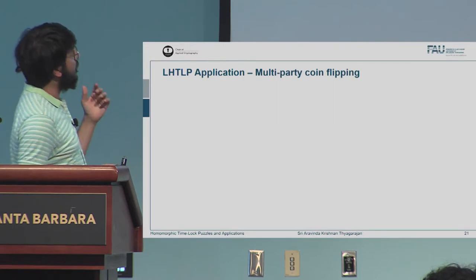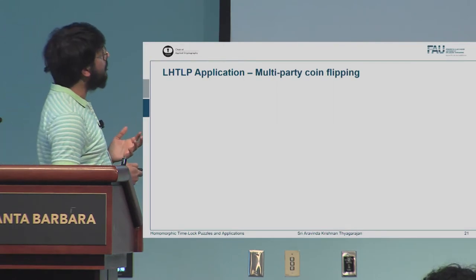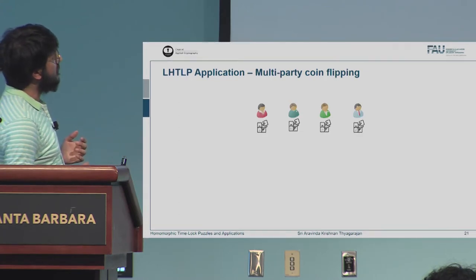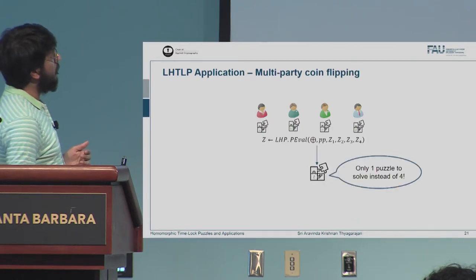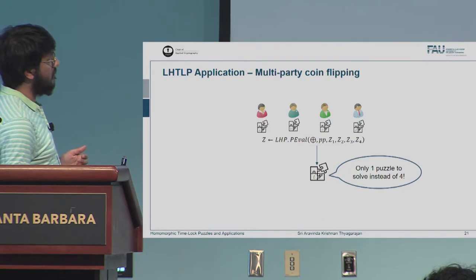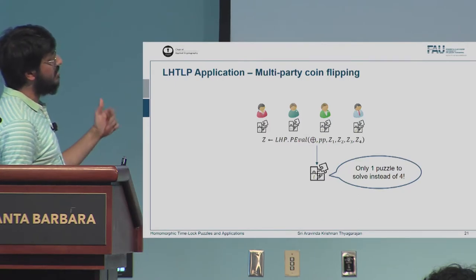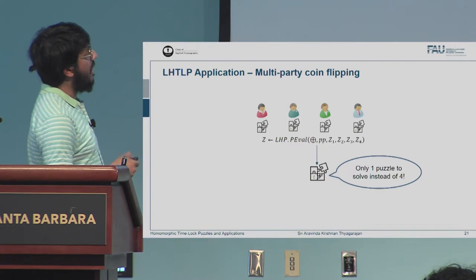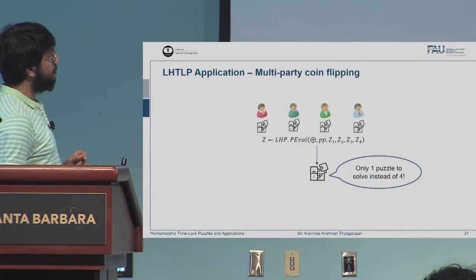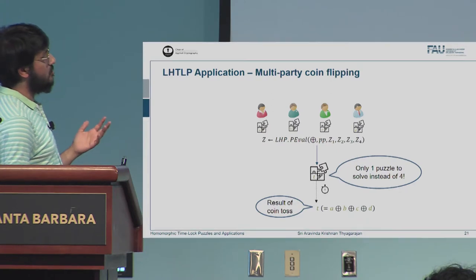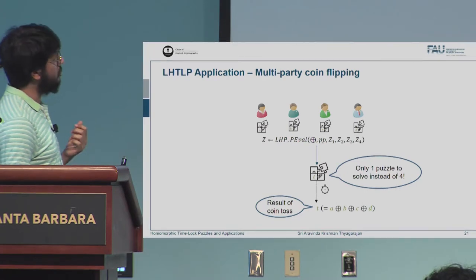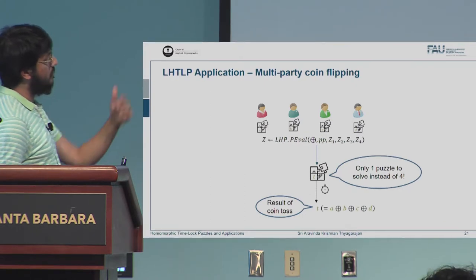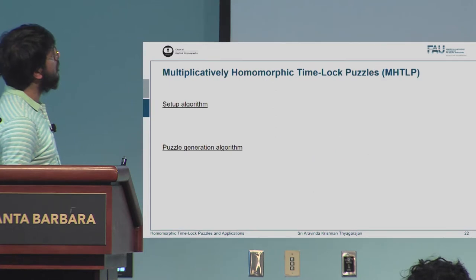The other application for our linear construction is multiparty coin flipping. Users embed their randomness inside puzzles and broadcast them. We homomorphically compute on top of these puzzles to obtain a resultant puzzle that has the combined randomness embedded. Instead of having four puzzles to solve, you now have just one. After spending time T solving this puzzle, you obtain the result of the coin toss — a linear combination of the randomnesses that were originally embedded.